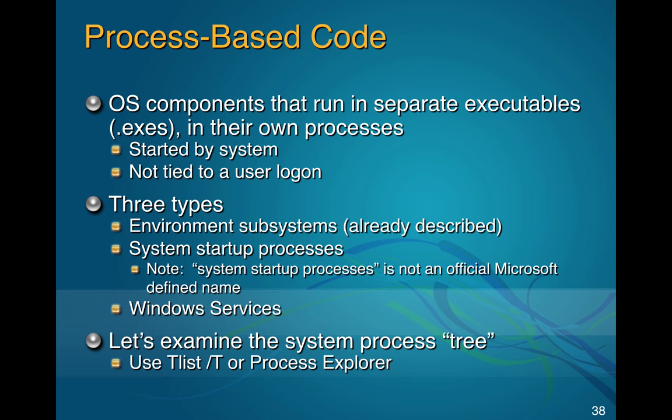Windows Genuine Advantage, where Microsoft software phones home to verify you paid for it, also failed. Their activation server kept going down, so thousands of completely legal copies of Vista just stopped working. In Vista Service Pack 1, they removed all enforcement of the product key and never put it back. Effectively, all desktop Windows is now freeware — you can install Windows up through Windows 10 without a product key and it will keep working forever, just popping up a box saying you should get one.